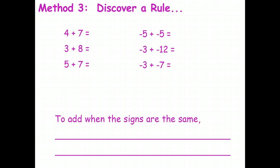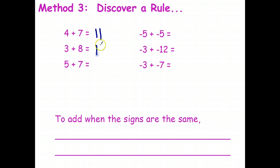From that we'll figure out what the rule is. Here we are — in this case we're adding numbers of the same signs. Over here we're adding two positive numbers, and over here we're adding two negative numbers.